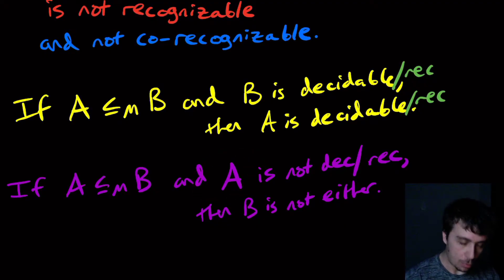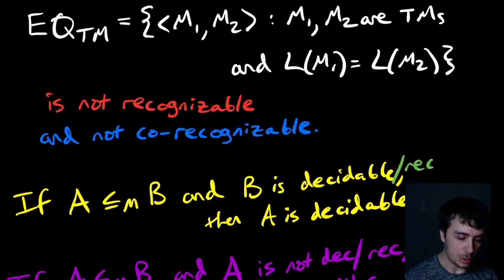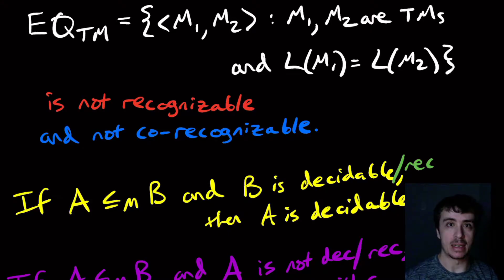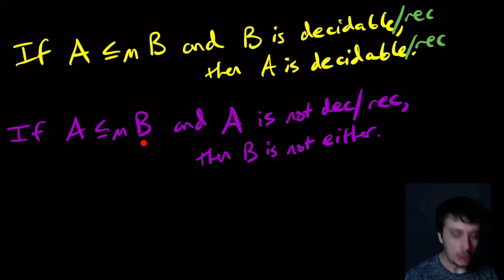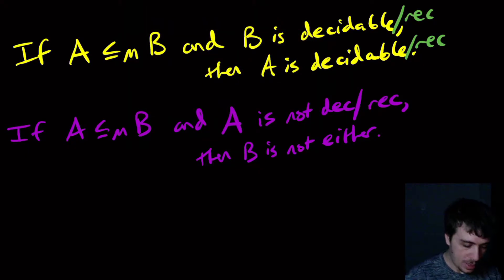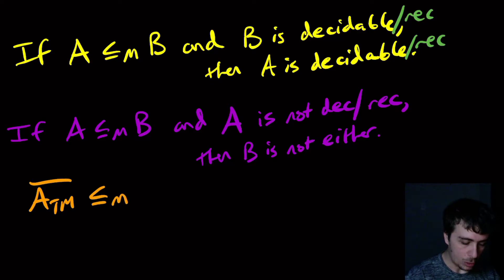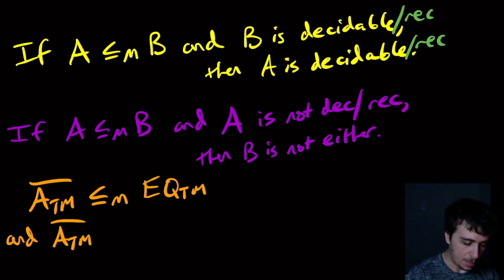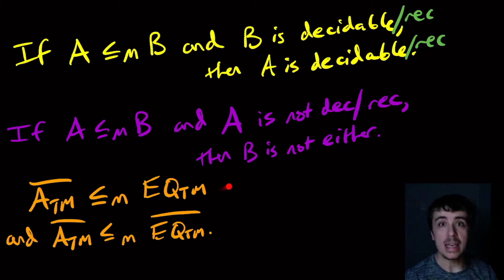The way we're going to do this is use that contrapositive to show that EQTM is not recognizable. We have to reduce to EQTM, meaning we start with a problem that is not recognizable. The prototypical one is ATM complement. So we're going to show ATM complement mapping reduces to EQTM, and the same for EQTM complement. This first reduction will show EQTM is not recognizable, and the second will show its complement is not recognizable.